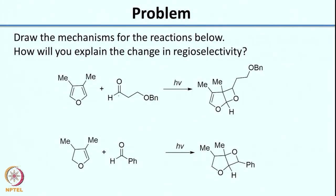Based on this, I would like you to work on 2 photochemical reactions shown. Both involve generation of a biradical on the C=O bond. Once you generate the biradical, it can interact with a double bond to give you 2 possible products. I would like you to draw the mechanism for both and explain why there is a change in regioselectivity when you change the molecule from a furan to a dihydrofuran. The difference between these 2 is that furan has 2 double bonds whereas dihydrofuran has only 1. Press pause and try to solve both problems and rationalize the regioselectivity.